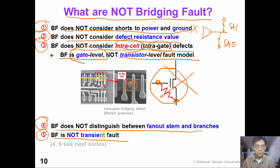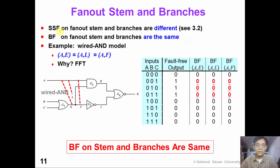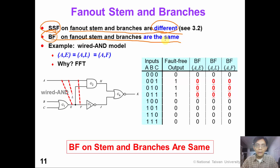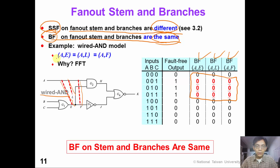For example, in this picture we see a piece of extra metal between the transistor gate and the drain — this is a transistor-level intra-gate defect. Because bridging fault is a gate-level fault model, we don't consider this kind of fault. Fourth, bridging fault does not distinguish between the fanout stem and the fanout branches. Fifth, bridging fault is not a transient fault. Regarding item four: in our discussion of single stuck-at faults, faults on fanout branches and the fanout stem are considered different; however, for bridging faults, faults on the fanout stem and its branches are considered the same.